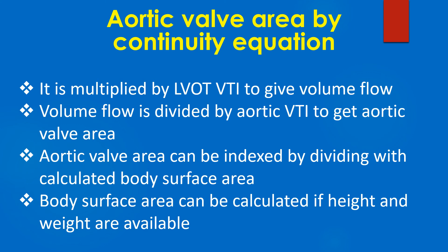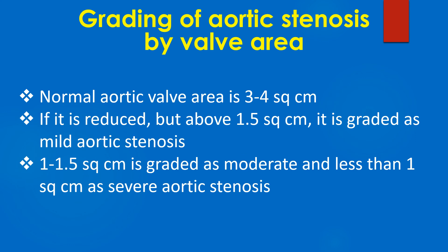Aortic valve area can be indexed by dividing by the calculated body surface area, which can be computed if height and weight are available. Normal aortic valve area is 3 to 4 cm². If reduced but above 1.5 cm², it is graded as mild aortic stenosis; 1 to 1.5 cm² as moderate; and less than 1 cm² as severe aortic stenosis.